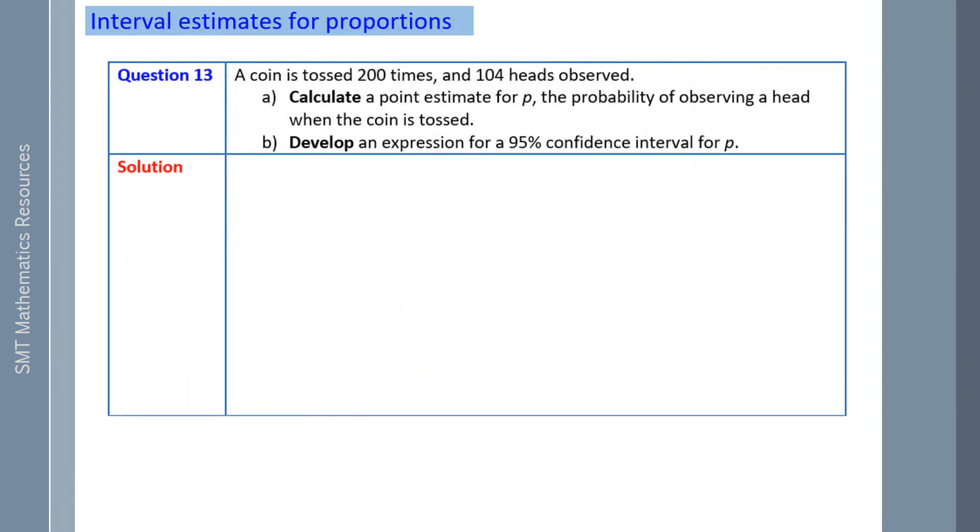The coin is tossed 200 times and 104 heads observed. So 104 is your number of successes, 200 is your sample size. Calculate a point estimate for P, the probability of observing a head when this coin in particular is tossed. So the number of successes was 104 out of a total of 200 in a sample. So about 52%.